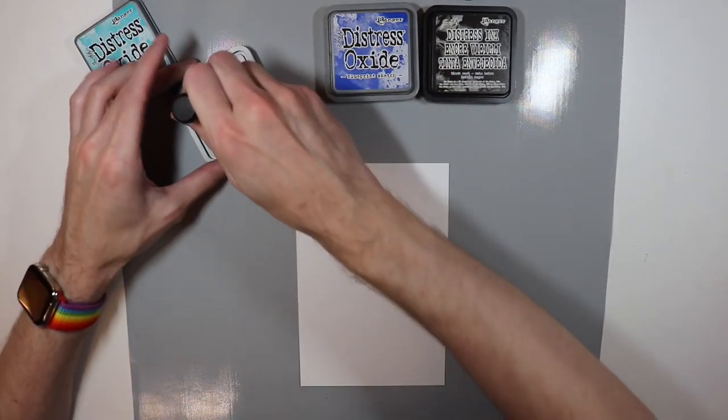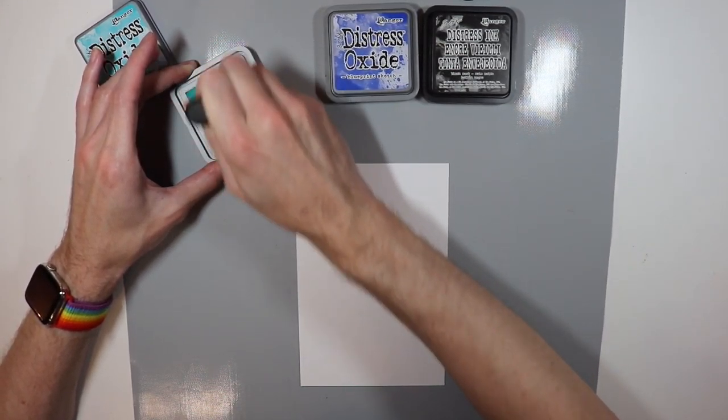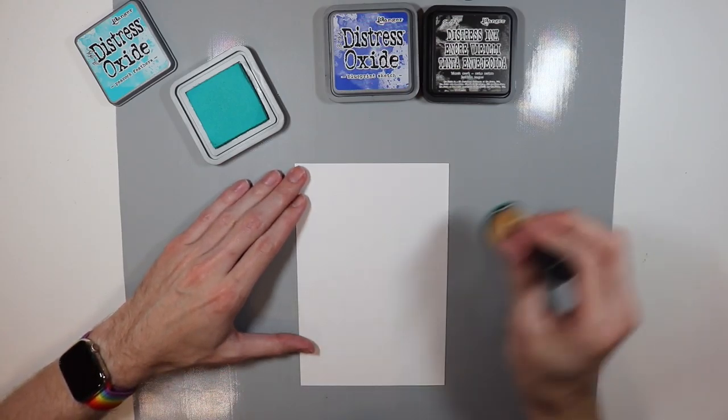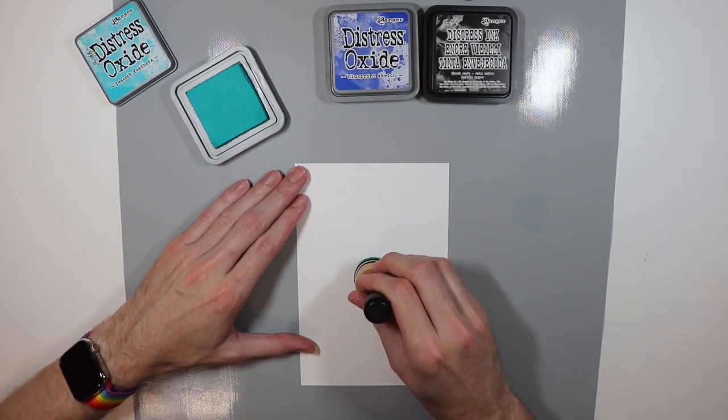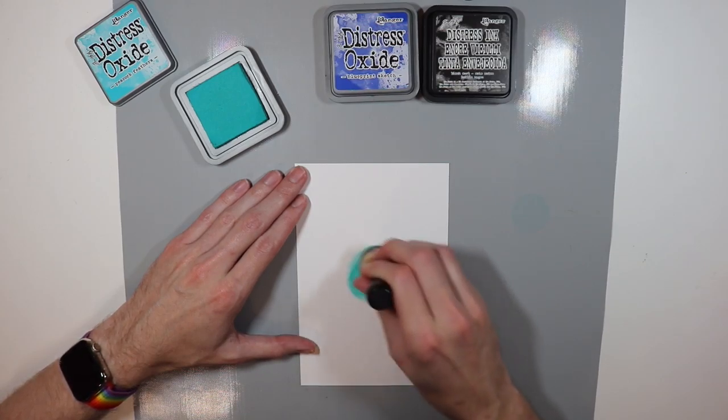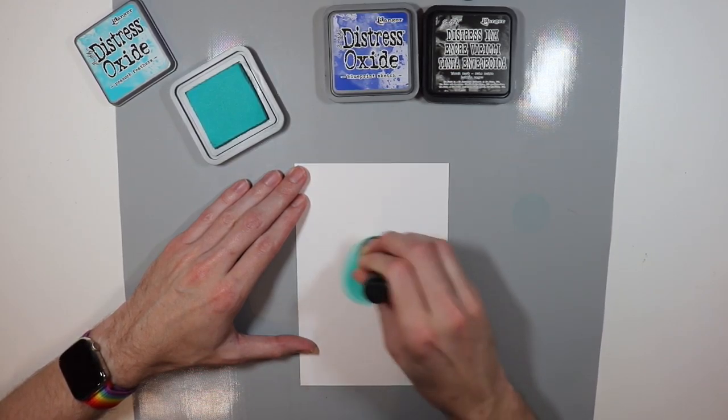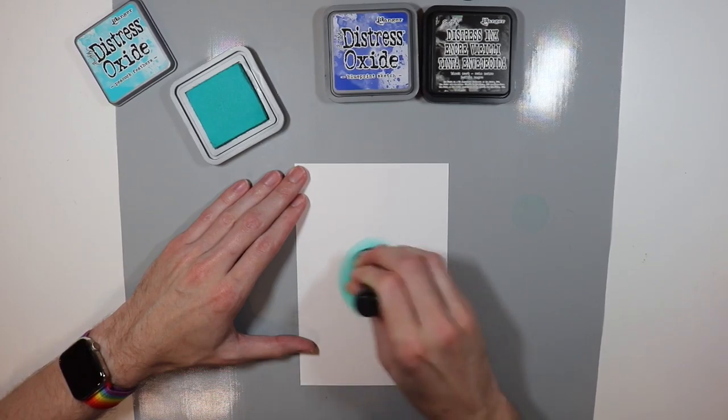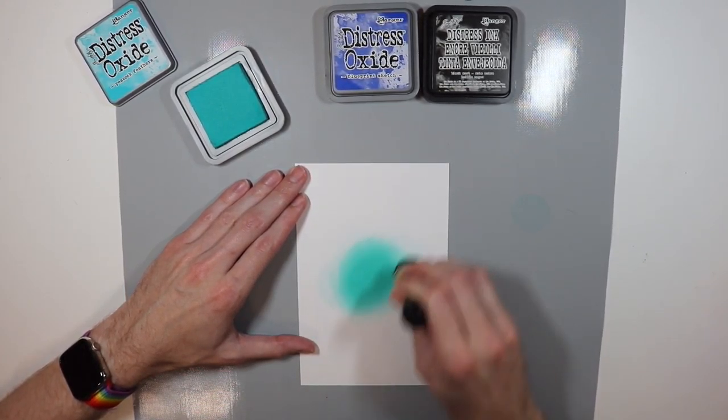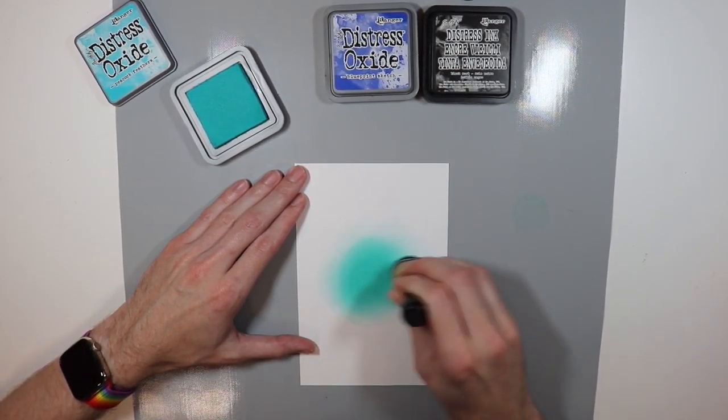What I'm going to do is start off with my peacock feathers, and this isn't always easy for me, but I'm going to start in the center of my design because I want a nice gradient heading out from the center. So I'm going to try and do a light hand and just work my way out from the center of this piece of Bristol paper because I want it to radiate out from the center.